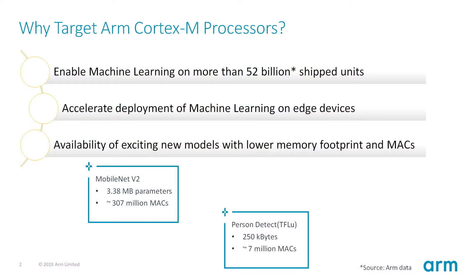Let's begin with why the machine learning story around ARM Cortex-M processors is important. We have more than 52 billion shipped units, and enabling them with machine learning capability opens a whole lot of new possibilities for edge devices.